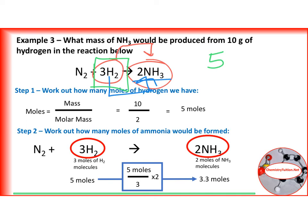And you divide that 5 by the big number in front of hydrogen, which is 3. And then you times it by the number of the compound that you are going to, which is 2.